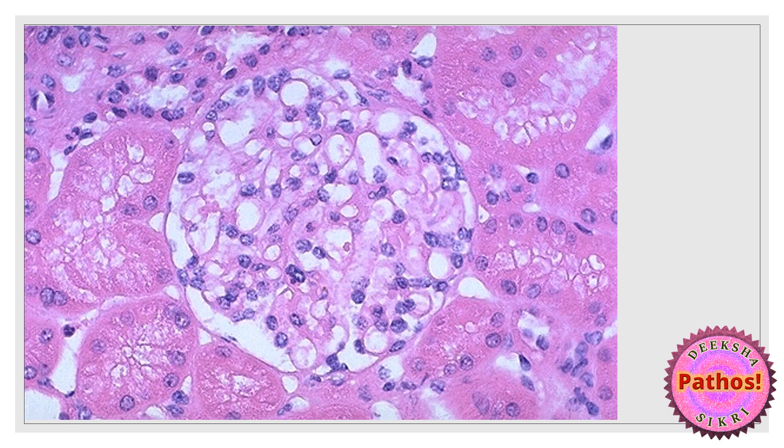This is a normal glomerulus surrounded by tubules. This is the Bowman's capsule — that circular structure. The empty circles you see in between are the capillary lumens, so every empty circle within the glomerulus is a capillary. The pink area with the gray arrow is the mesangium — break down the word: 'meso' means between, 'angium' means vessel. The blue nuclei in it are the mesangial cells.